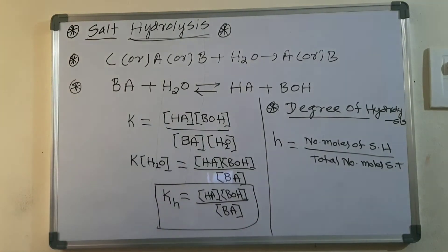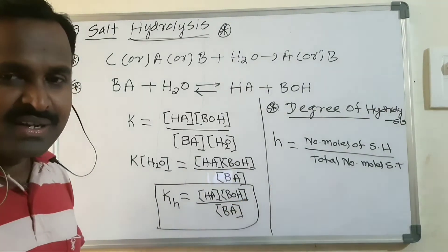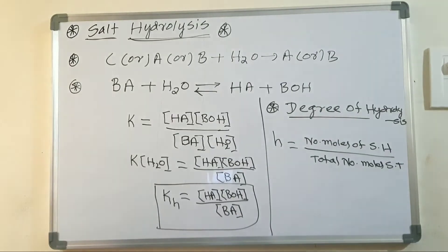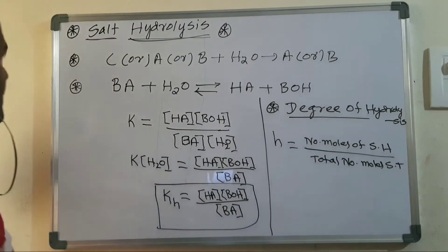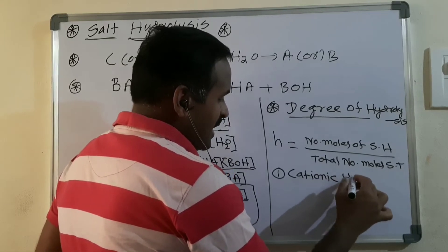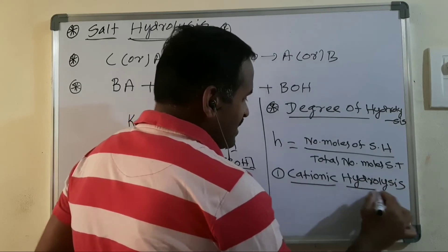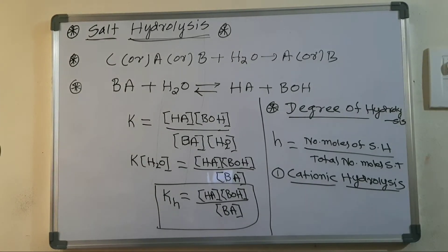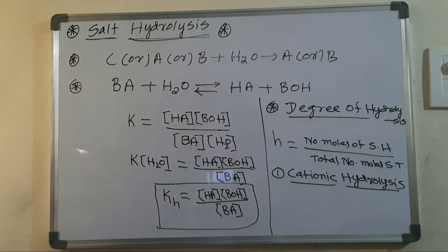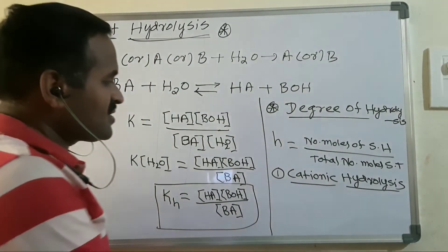Salt hydrolysis is generally of two types: cationic hydrolysis and anionic hydrolysis. In cationic hydrolysis, the cation of the salt reacts with water to produce an acidic solution.